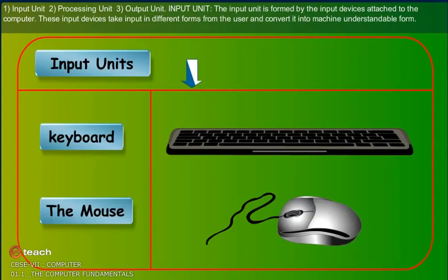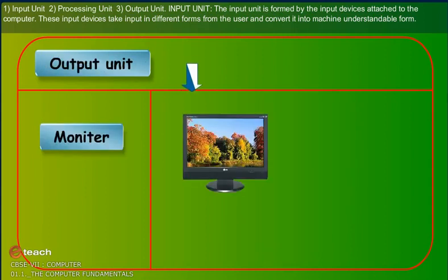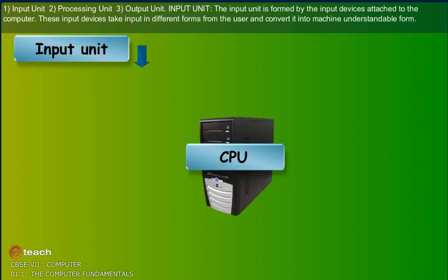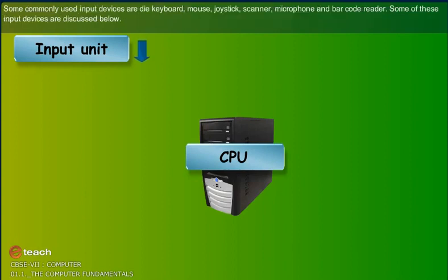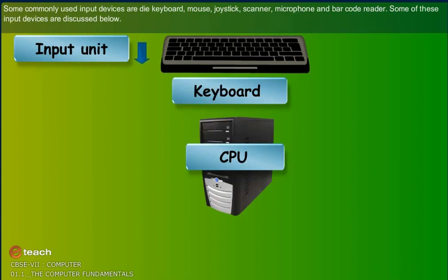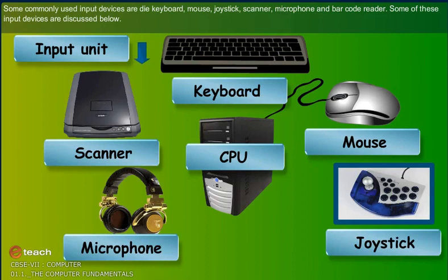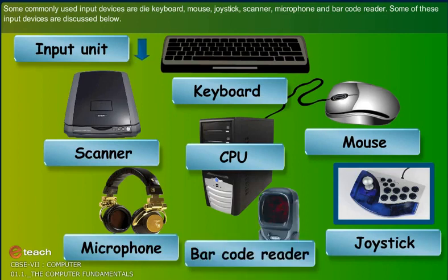Input unit, Processing unit, Output unit. The input unit is formed by the input devices attached to the computer. These input devices take input in different forms from the user and convert it into machine-understandable form. Some commonly used input devices are: keyboard, mouse, joystick, scanner, microphone, and barcode reader.